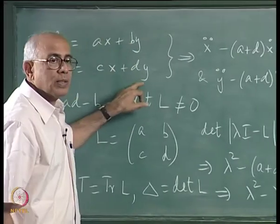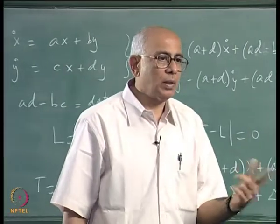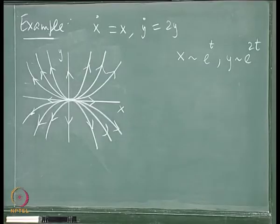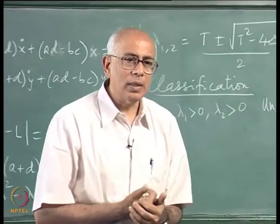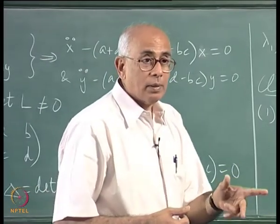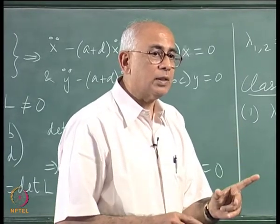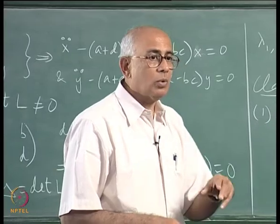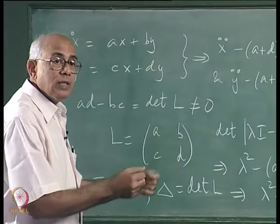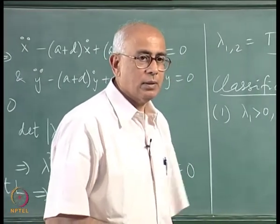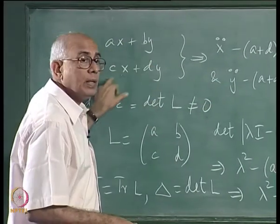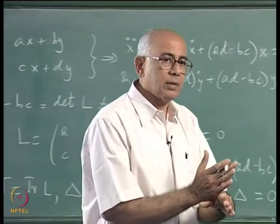We can regard ax + by and cx + dy as linear transformations of the x and y coordinates by the non-singular matrix [[a,b],[c,d]]. Taking linear combinations U = ax + by and V = cx + dy, the U and V axes are not in general at right angles — you can have oblique axes. The scale on each direction could also be magnified or demagnified.